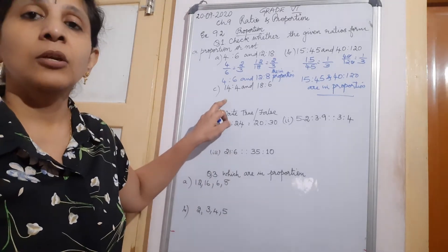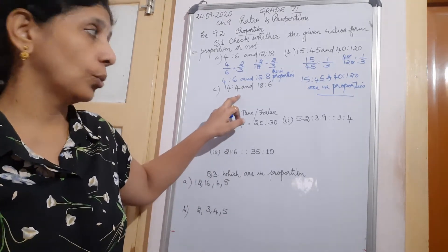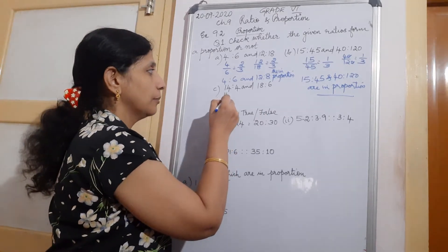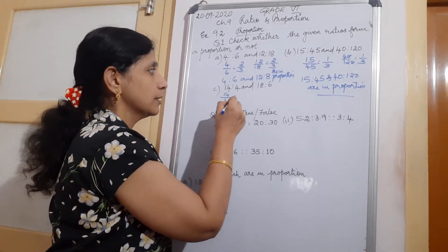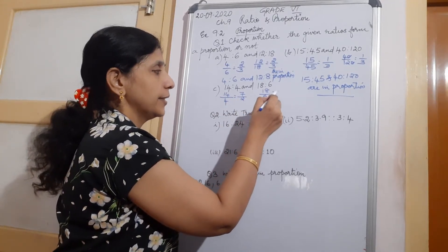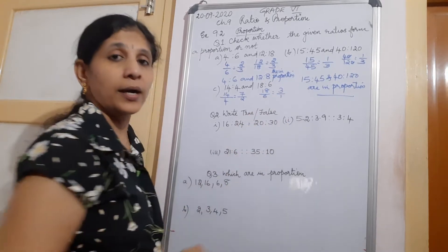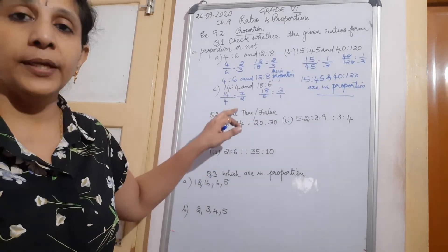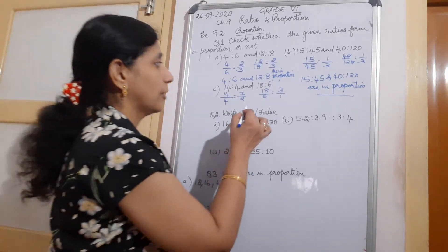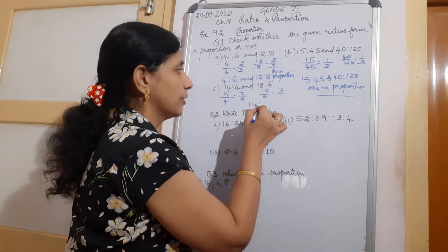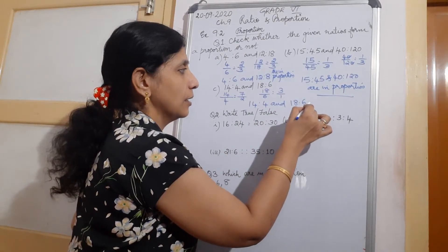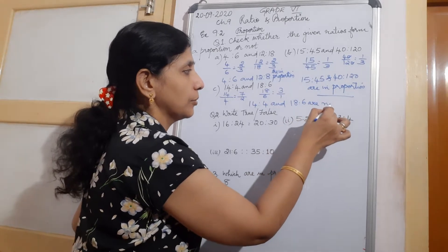Now the third one: 14 is to 4 and 18 is to 6. So 14 by 4 is 7 by 2, and 18 upon 6 is 3 by 1. Are they equal? One is 7 by 2 and the other is 3 by 1 — they are not equal. So 14:4 and 18:6 are not in proportion.